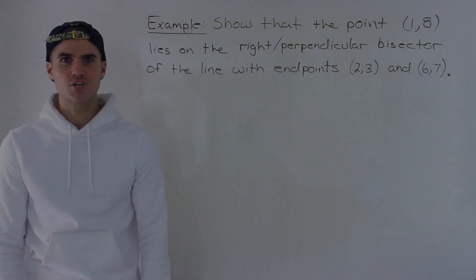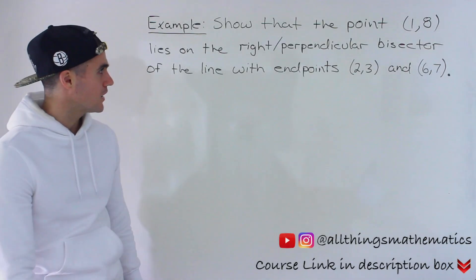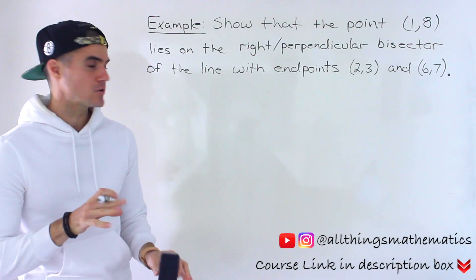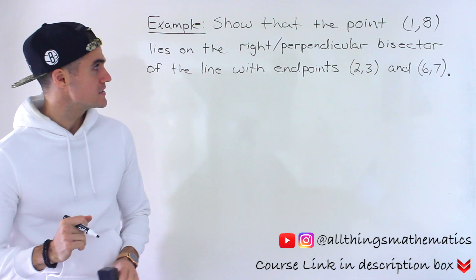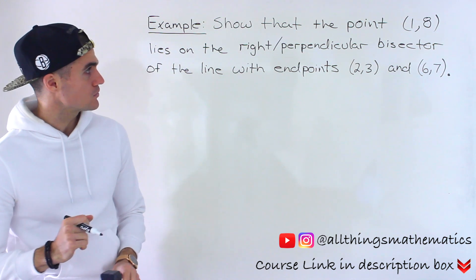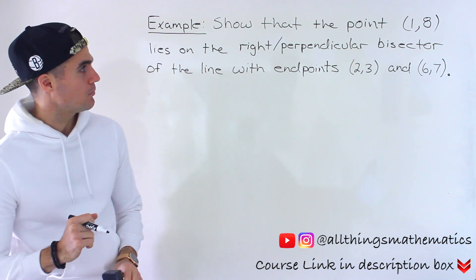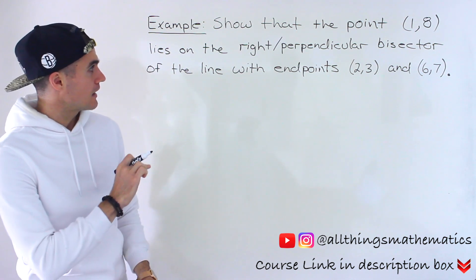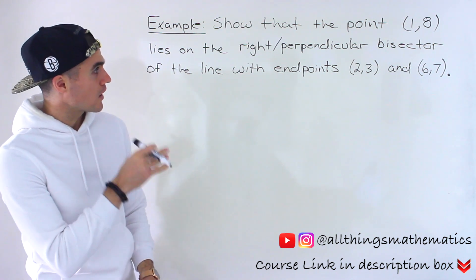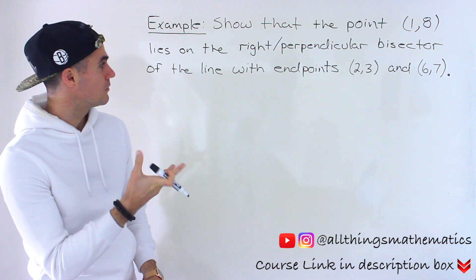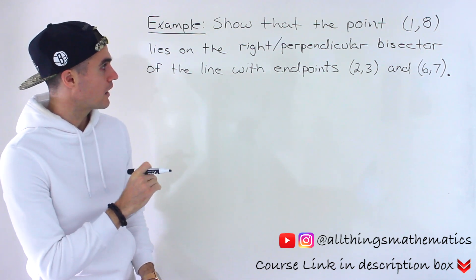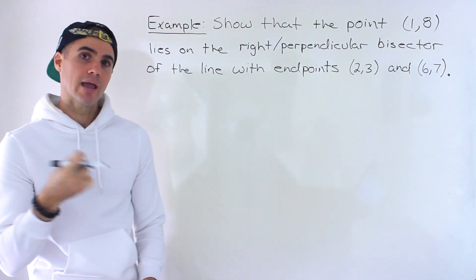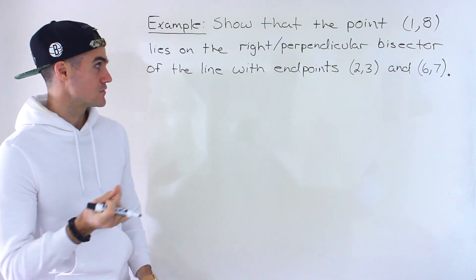Welcome back everyone, Patrick here, moving on to the next question. This is a popular one that you may see come up. We have to show that the point (1, 8) lies on the right or perpendicular bisector of the line with the endpoints (2, 3) and (6, 7).